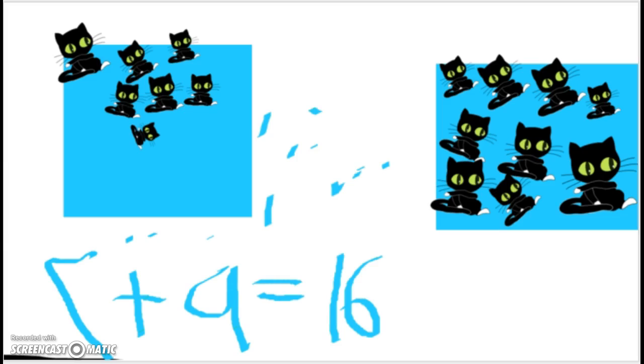I had seven cats on my bed. Nine more came on my bed. How many are there? Seven plus nine equals sixteen.